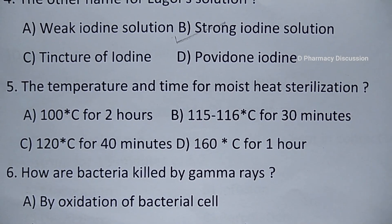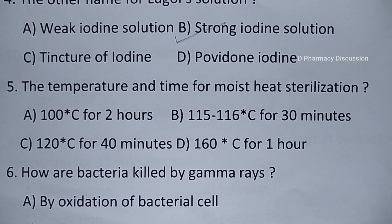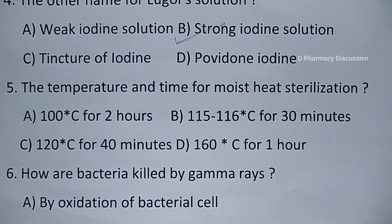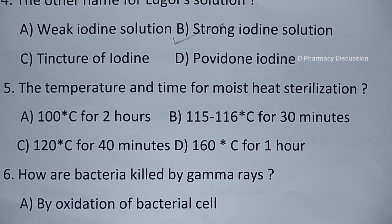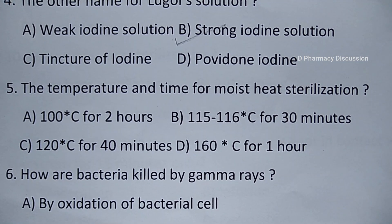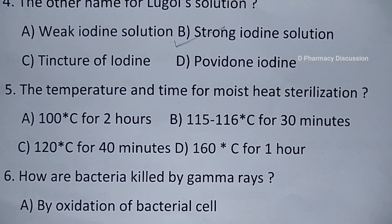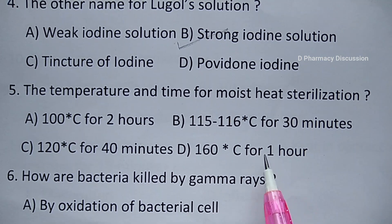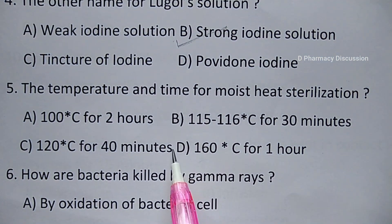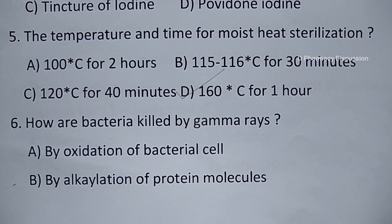Question number 5: the temperature and time for moist heat sterilization. Options are A. 100 degree Celsius for 2 hours, B. 115 to 116 degree Celsius for 30 minutes, C. 120 degree Celsius for 40 minutes, and option D. 160 degree Celsius for 1 hour. Correct answer is option D, that is 160 degree Celsius for 1 hour.